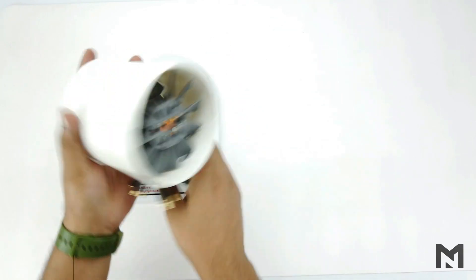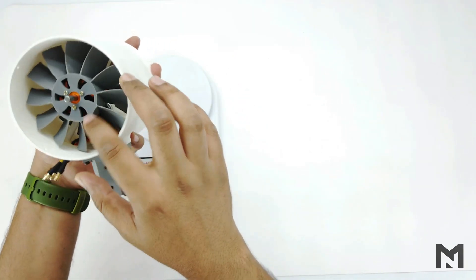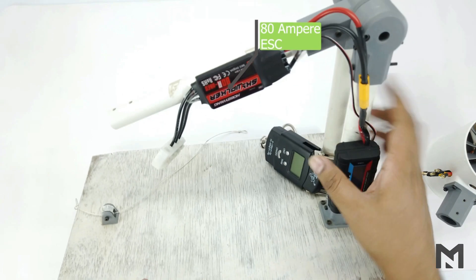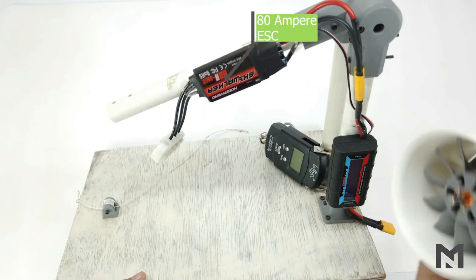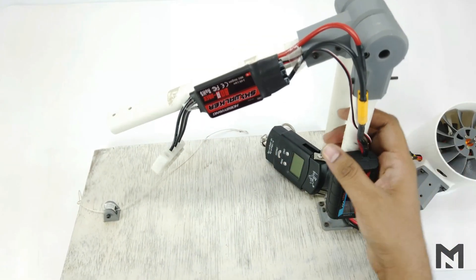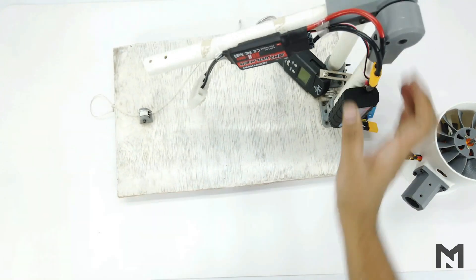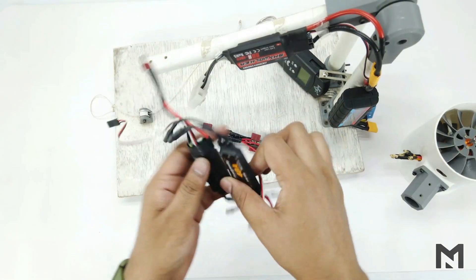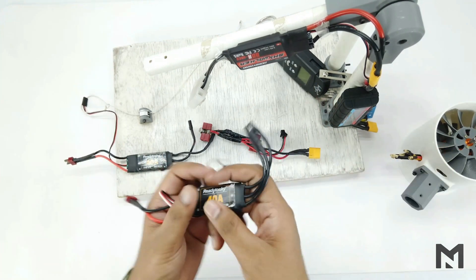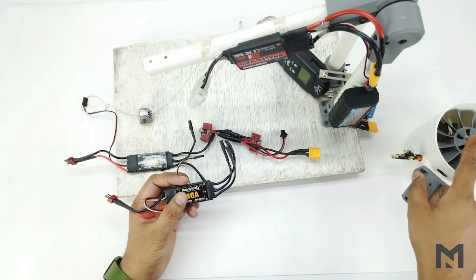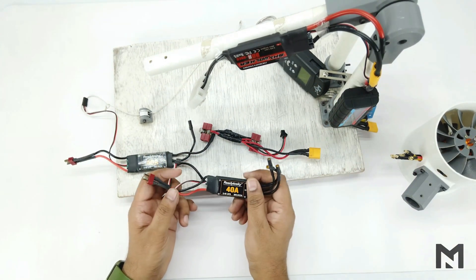I don't know about the thrust but I am sure it will have a high mass flow rate. Currently I am using an 80 ampere ESC but since we are using two motors we need to replace the ESC. I will be using these two 40 ampere ESCs. The recommended ESC for these motors is 50 ampere but since I don't have it I will use the 40 ampere ESC.